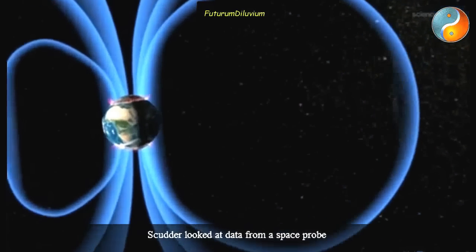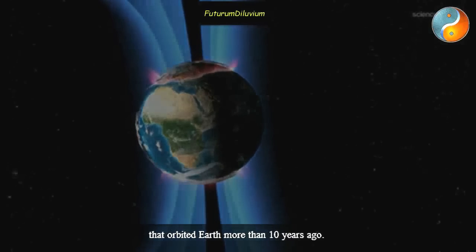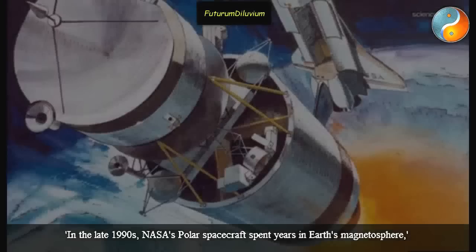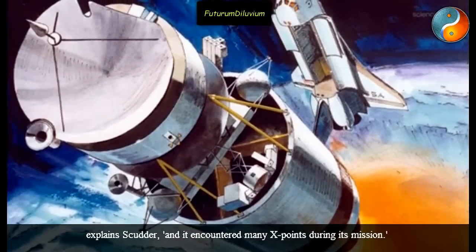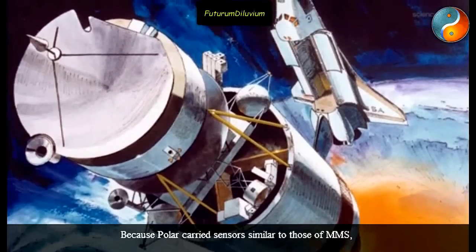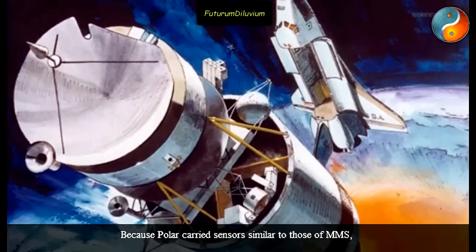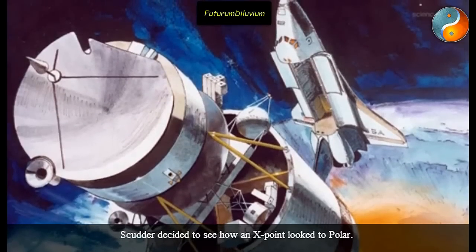To learn how to pinpoint these events, Scudder looked at data from a space probe that orbited Earth more than 10 years ago. In the late 1990s, NASA's Polar spacecraft spent years in Earth's magnetosphere, explained Scudder, and it encountered many X-points during its mission. Because Polar carried sensors similar to those of MMS, Scudder decided to see how an X-point looked to Polar.